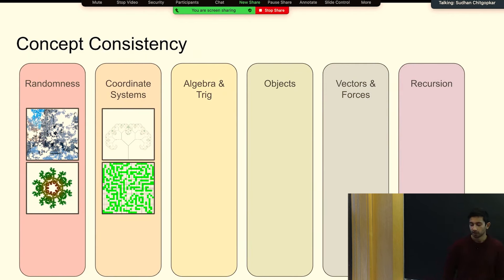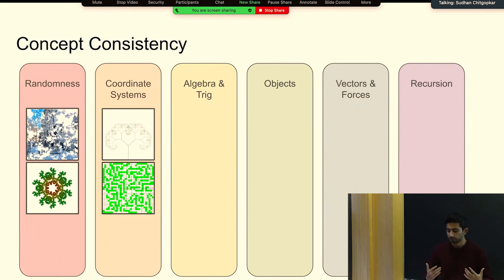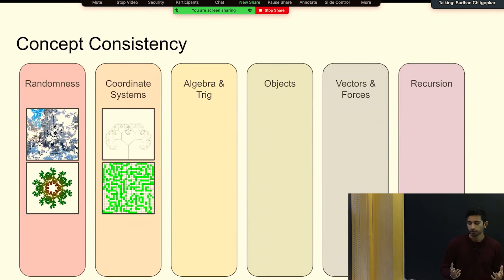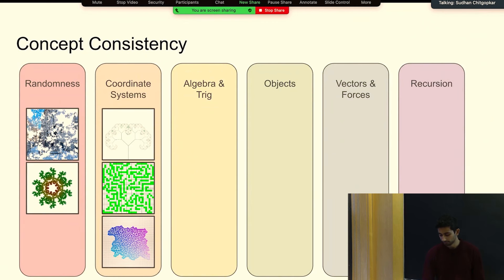The second time we saw coordinate systems at play was with Conway's Game of Life. We just had to understand how our coordinate system worked so we could put cells next to each other in a grid. Once we understood that, everything else was just messing with some of the attributes of the cells themselves and applying Conway's Game of Life's rules to the coordinate system. The cellular automata mazes, just like Conway's Game, used coordinate systems in the exact same way.